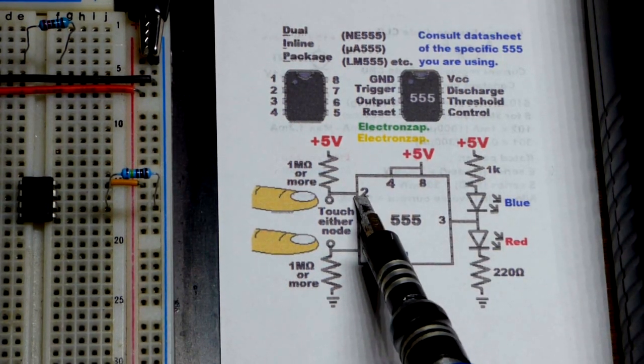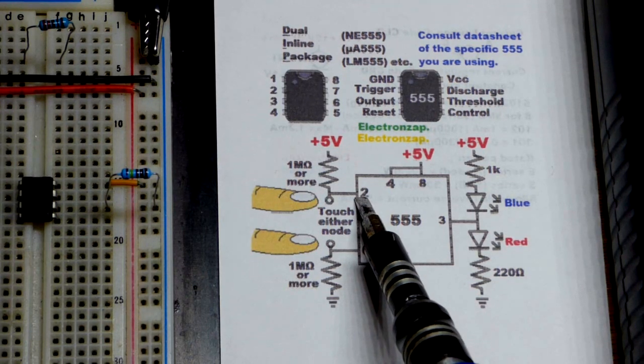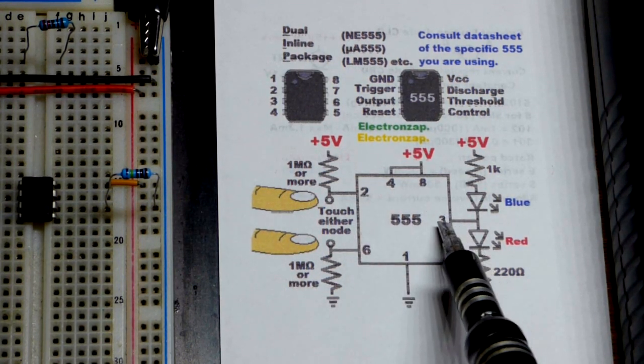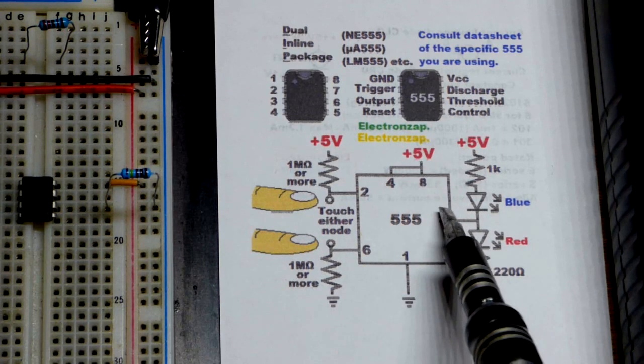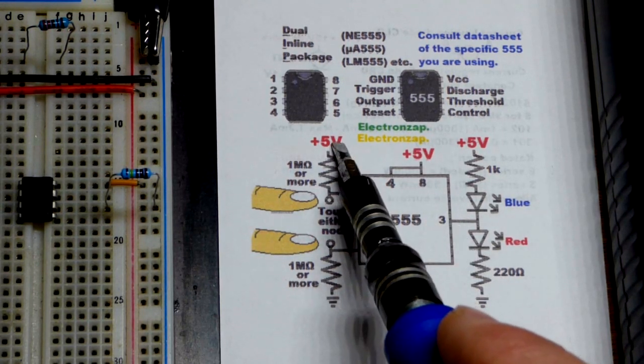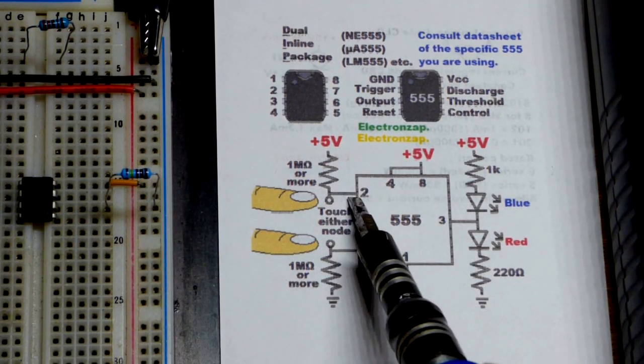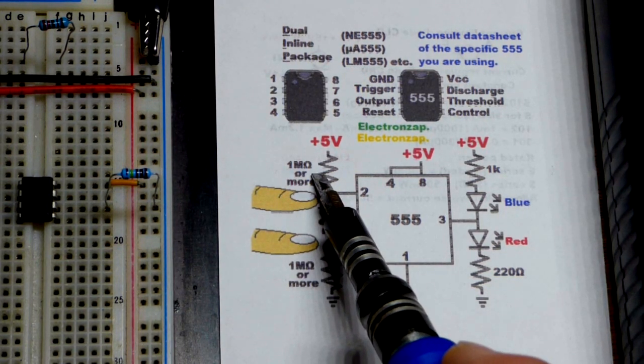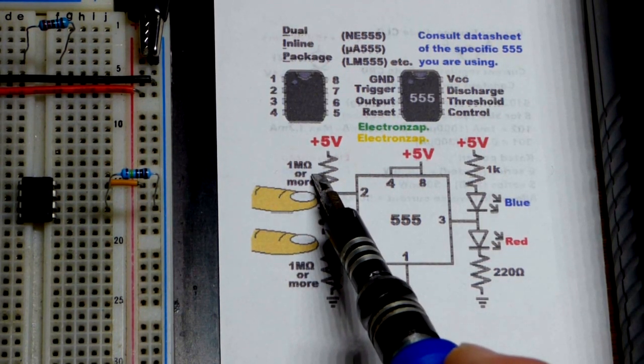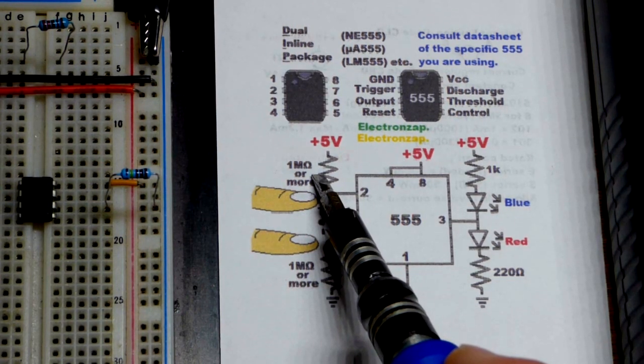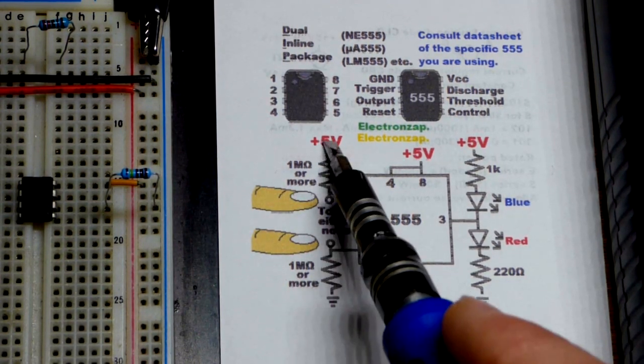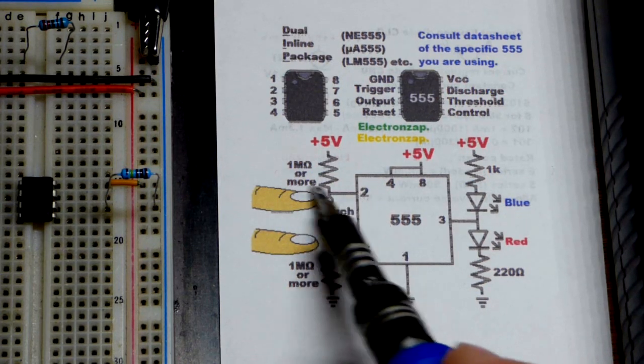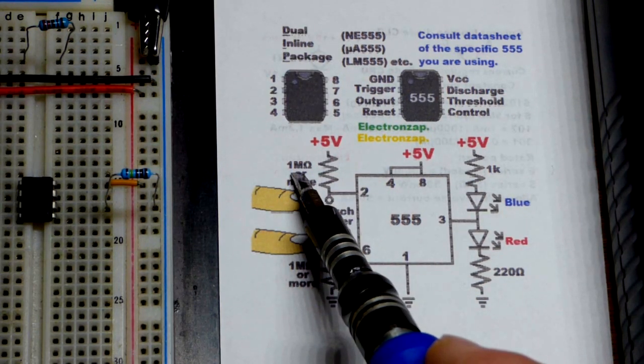Trigger pin number 2 is waiting for a low input for it to set the output high. 5 volts. That's what it is. So we are going to hold it high. That's going to tell it not to do anything. 1,000,000 ohm resistor. We want a high value resistor because my body is not going to produce much voltage. So this will just barely hold it on.